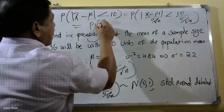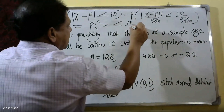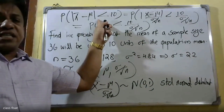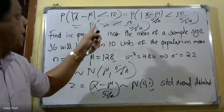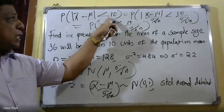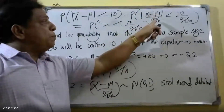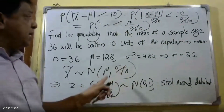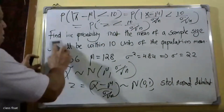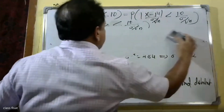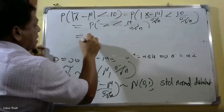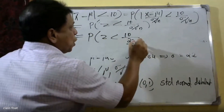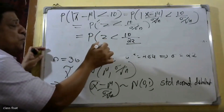The modulus of the sampling mean difference from the population mean is less than 10. That is equal to the probability of |(x̄ minus mu) divided by (sigma by root n)| less than 10 divided by (sigma by root n). Now we write sigma by root n, where n is equal to 36.